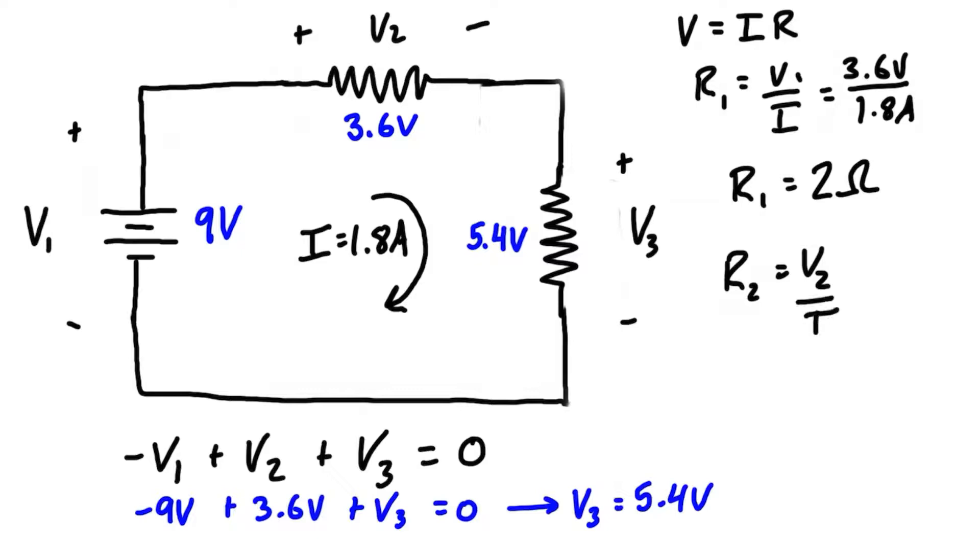Then we can do the same for r2. R2 is just equal to v2 over i, so that's going to be 5.4 volts over 1.8 amps, and that gives us a value for r2 of 3 ohms.